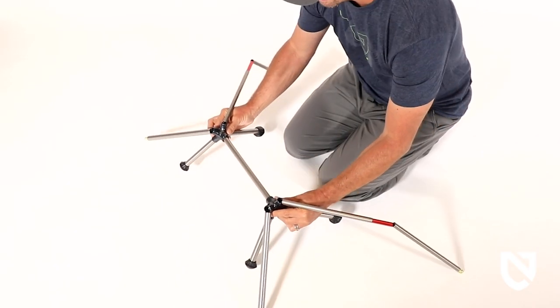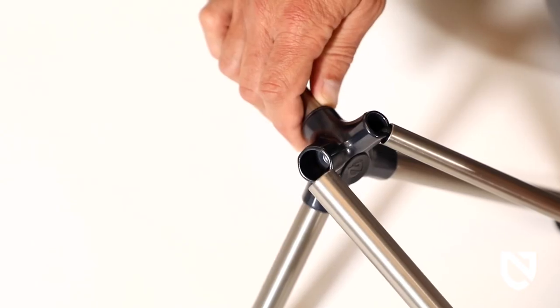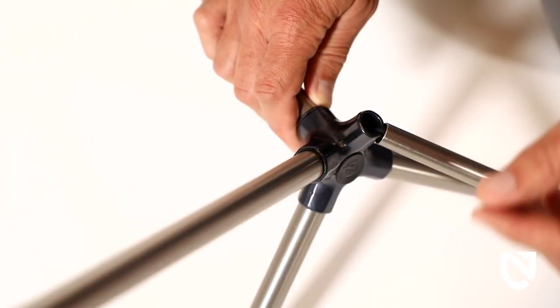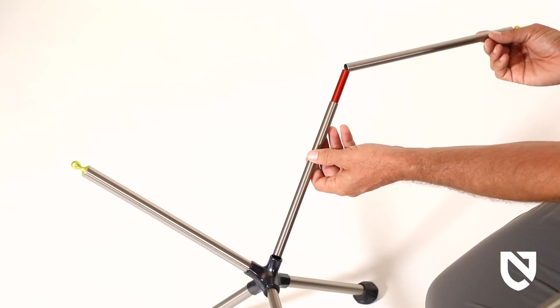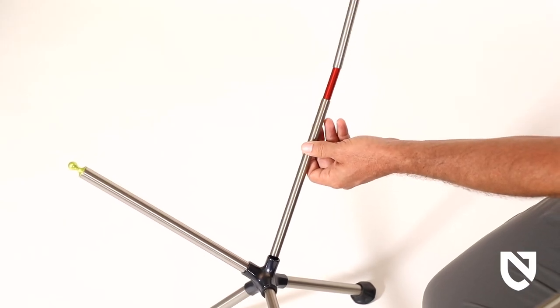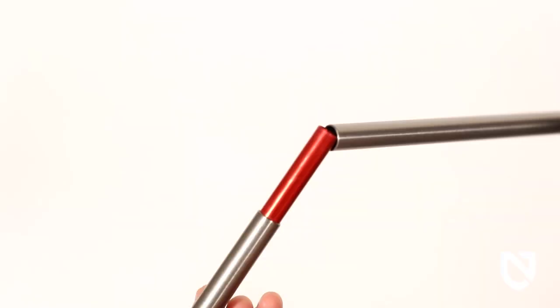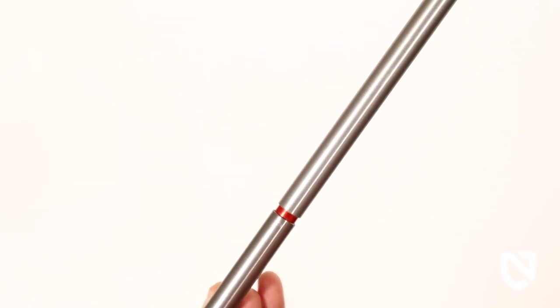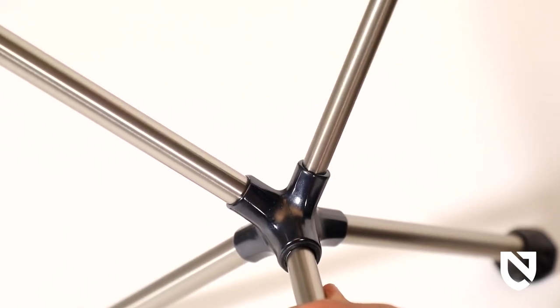Now place the frame on level ground and connect the seat support poles to the hub. When connecting the back support pole segments, be sure the red ferrule is completely covered up, indicating it is fully seated, and then insert them into the hub as well.